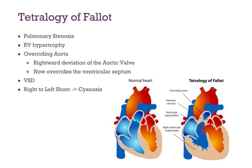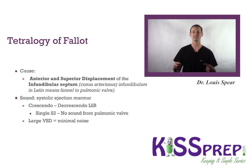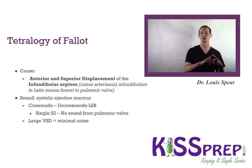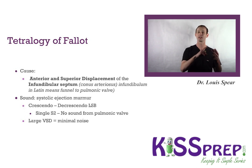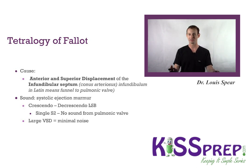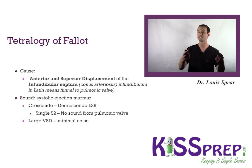The shunt that causes cyanosis in Tetralogy of Fallot is right to left — that makes sense because the right side of the heart has deoxygenated blood that hasn't gone through the pulmonary artery to the lungs. What causes Tetralogy of Fallot is the anterior superior displacement of the infundibular septum, also known as the conus arteriosus. You'll hear a systolic ejection murmur, crescendo-decrescendo, at the left sternal border.